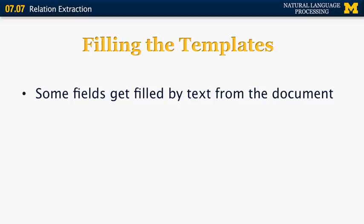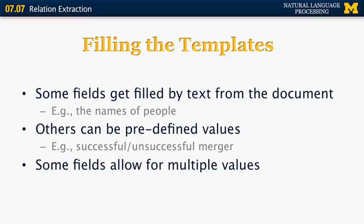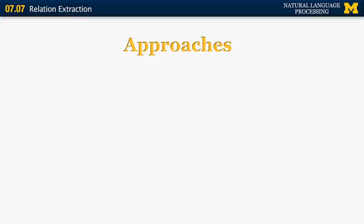So filling the templates, some of the fields have to be filled by text from the document, essentially extracting an entire string of text, for example, the name of a company or the name of a gene directly from the document. Others can be predefined values, for example, whether a certain attempt was successful or not, like a successful merger or whether the merger was unsuccessful. Some fields allow for just one value, some allow for multiple values.